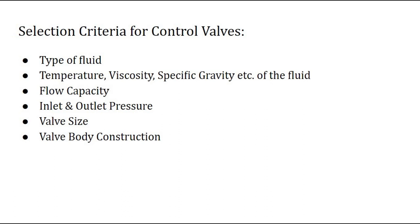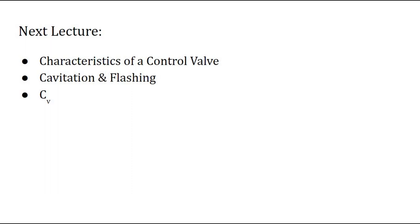Now that we have covered the different types of control valves with their advantages and disadvantages, let us look at the selection criteria for control valves. Before selecting a control valve, we consider: the type of fluid passing through the valve, the temperature, viscosity, specific gravity, and other fluid parameters. We also consider the flow capacity of the valve, the inlet and outlet pressure, the valve size, and the valve body construction. In the next lecture, we will cover the characteristics of control valves, cavitation and flashing, and the valve coefficient CV.